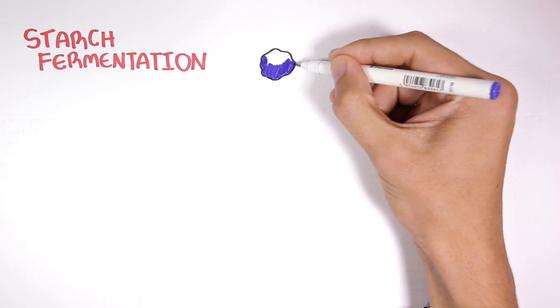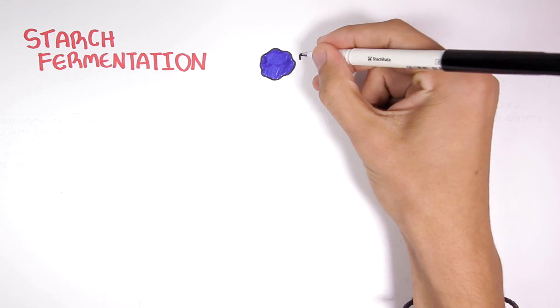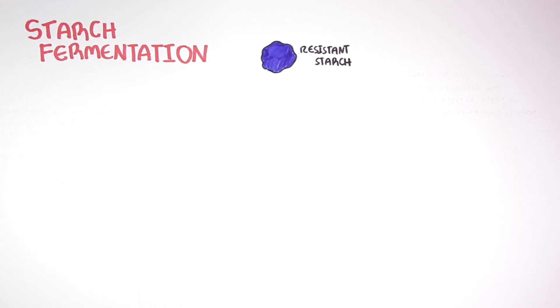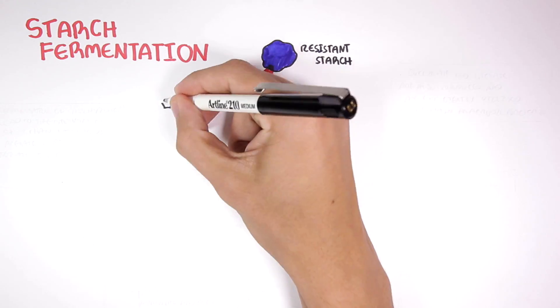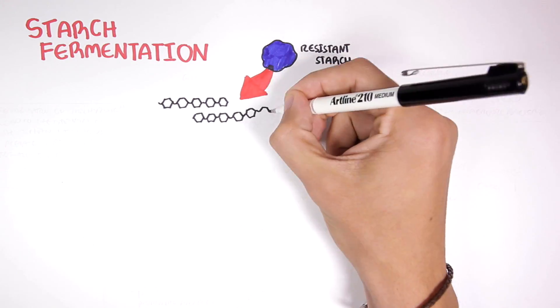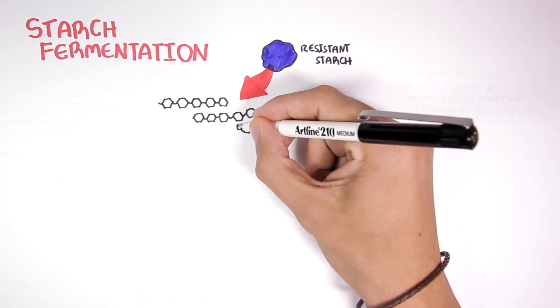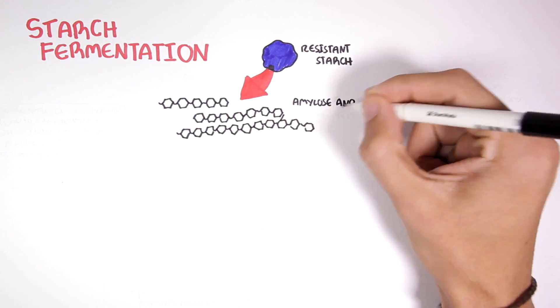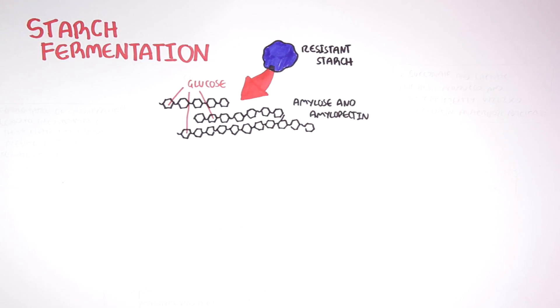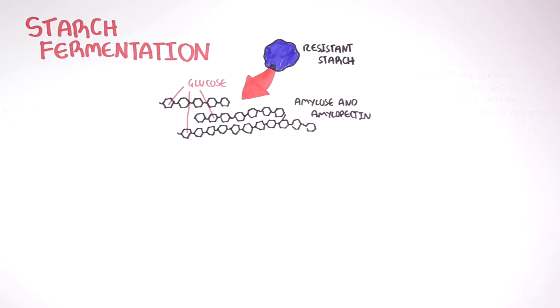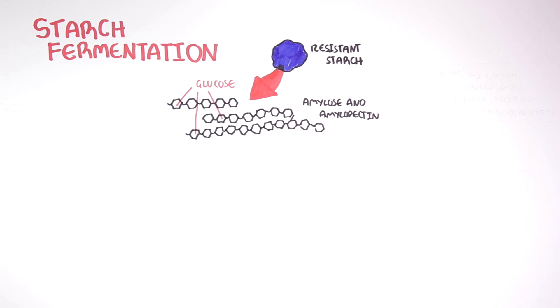Starch that has resisted digestion in the small intestine and reached the colon is called resistant starch. Resistant starch will undergo fermentation by bacteria in the colon. Resistant starch is made up of amylose and amylopectin, which are two forms of glucose polymers.